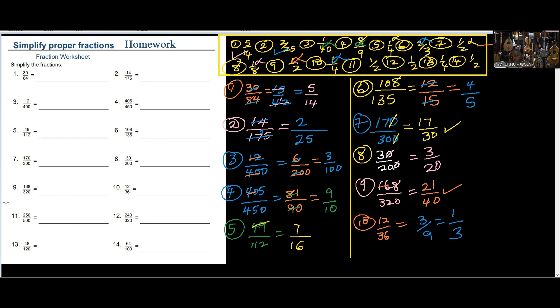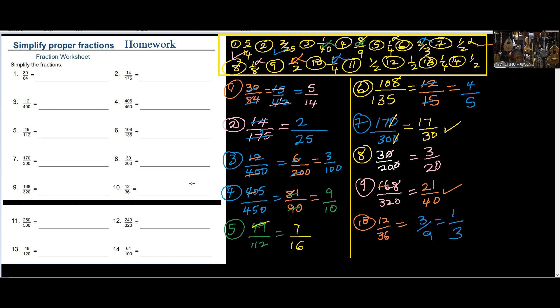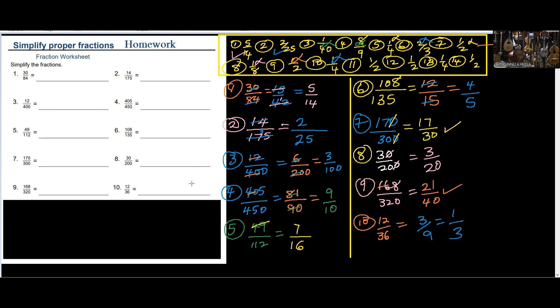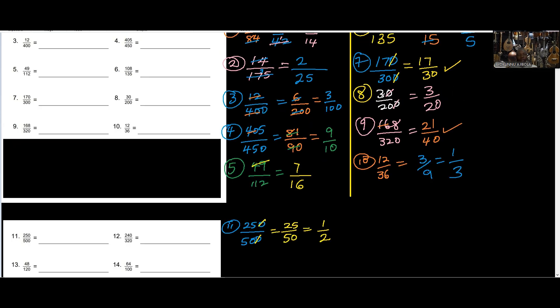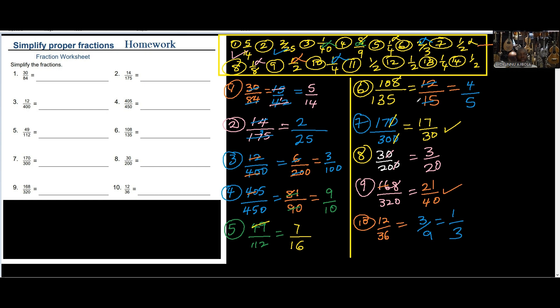Numbers 11 to 14 — moving to the next page. Number 11: 250 divided by 500. This is like halfway. Zero cancels zero giving 25 over 50, and 25 over 50 simplifies to 1 over 2. Number 11 is correct.